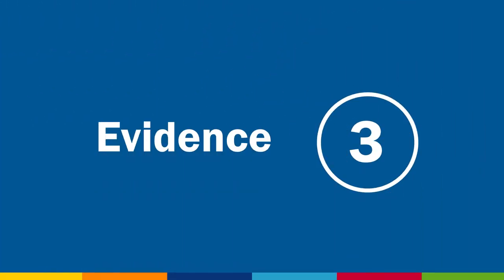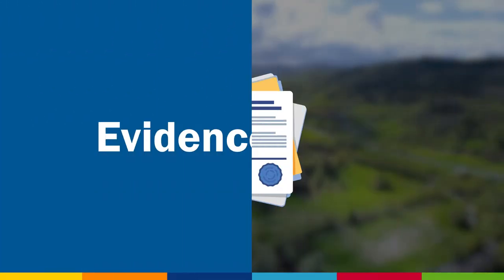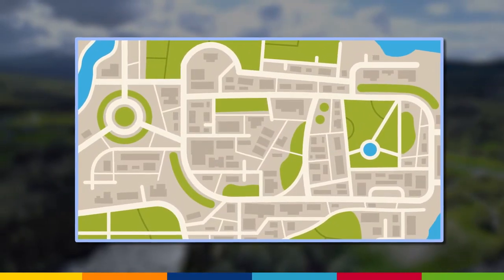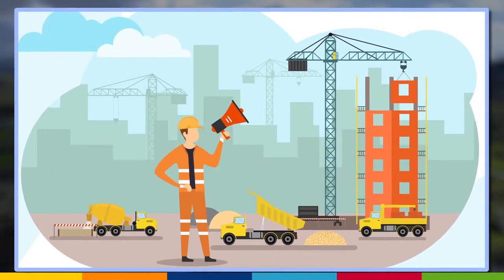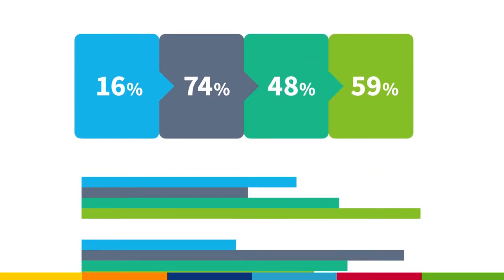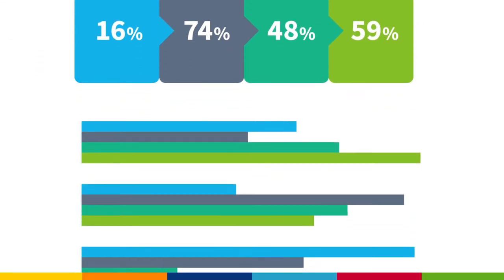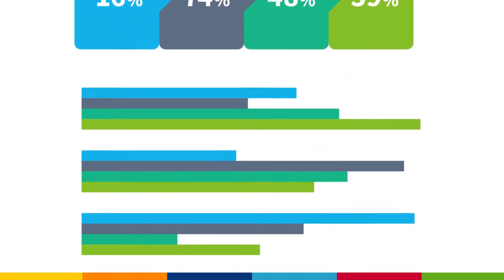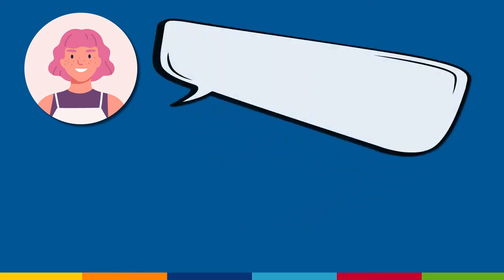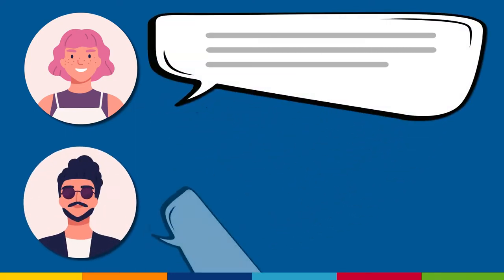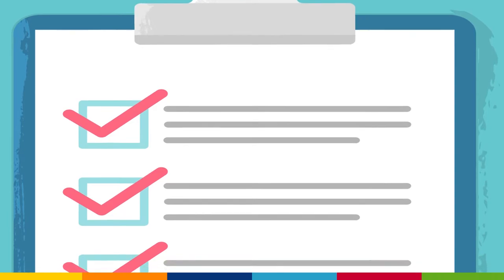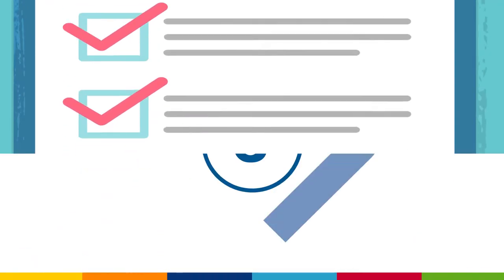Step 3 – Evidence. The next step of the rate case is the discovery process. This allows parties to request and receive additional information, or evidence, about the company's application for new rates and the supporting data. Testimony from witnesses is submitted in advance of formal hearings. Parties can reply to each other's testimony through written rebuttal.